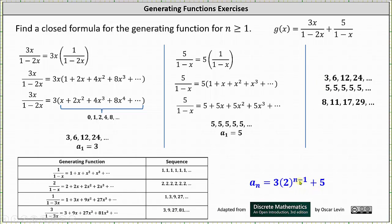Notice when n is equal to 2, we have 3 times 2 to the first, which is 6, plus 5, which gives us 11. This verifies this is the correct closed formula for n greater than or equal to 1. I hope you found this helpful.